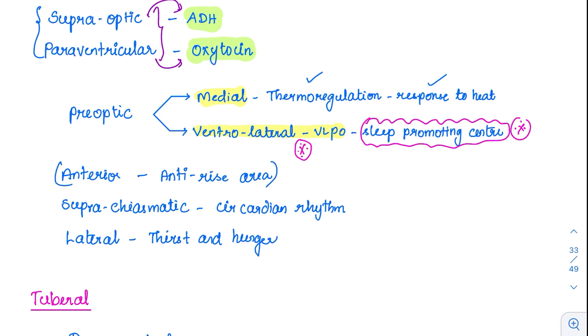Anteriorly we have the anti-rise temperature area. Posteriorly we have the anti-fall temperature area. Whenever there is cold we will vasoconstrict and try to conserve heat, and it will also activate the shivering mechanism. So anterior is for anti-rise, posterior is for anti-fall.